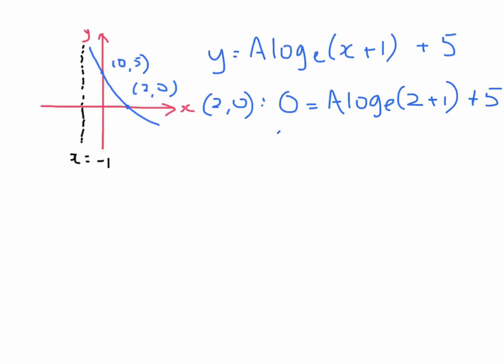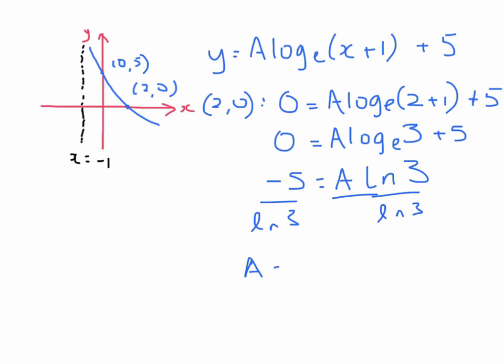Now we can work this out as 0 equals a log to the base e of 3 plus 5. And since we're trying to solve for a, what we have to do is subtract off 5 first and then divide by log to the base e of 3, or ln really. So we have minus 5 equals a ln of 3. And then we divide by ln of 3, so you get a equals negative 5 over log to the base e of 3. That's the exact version. If we type that into our calculator, you get negative 4.55, and that's correct to two decimal places.